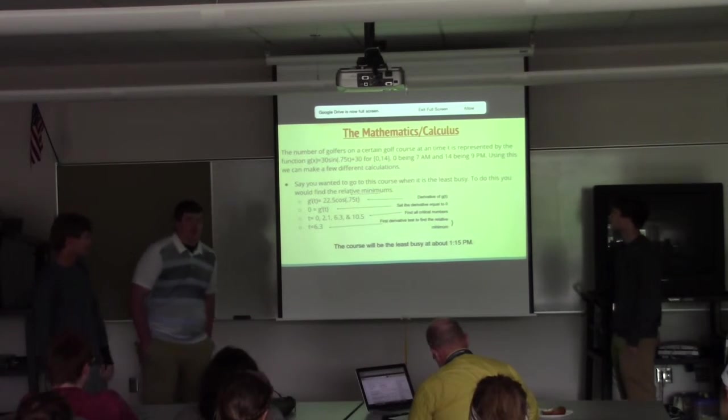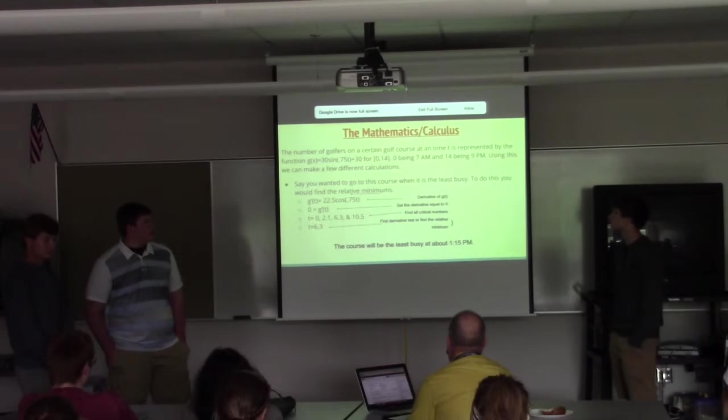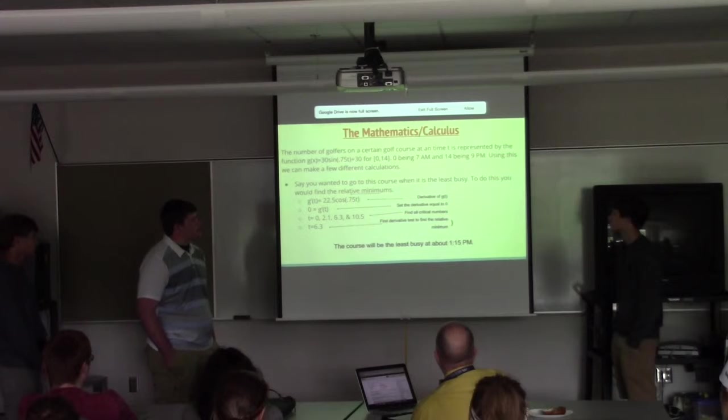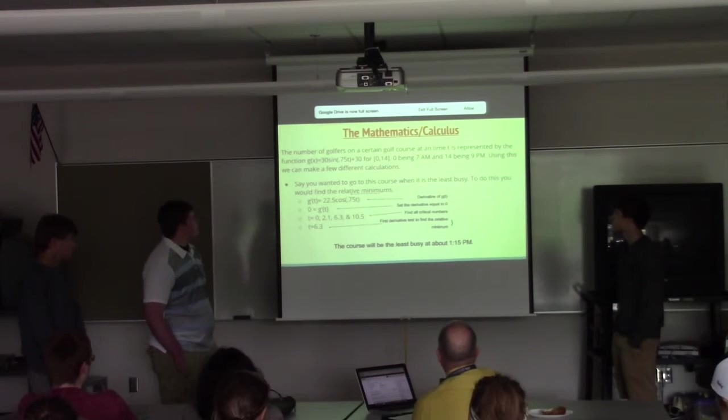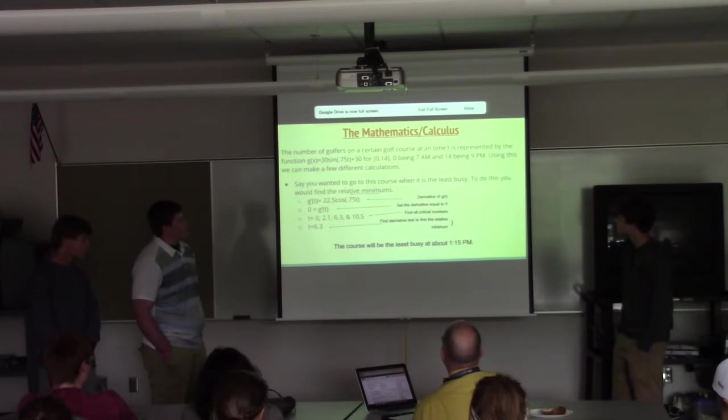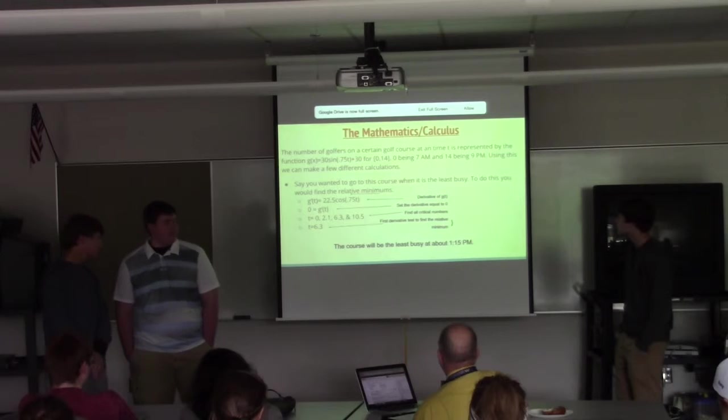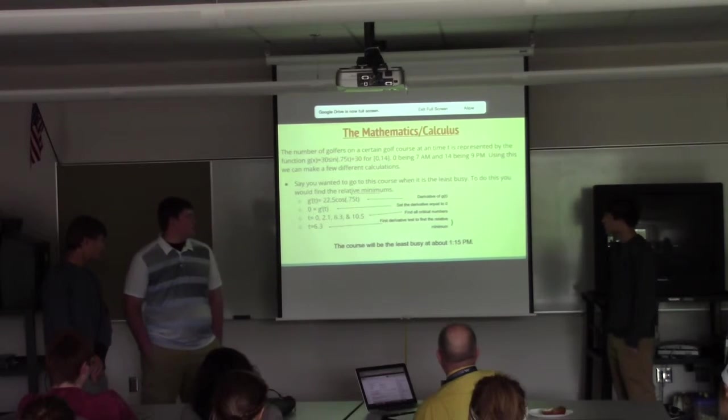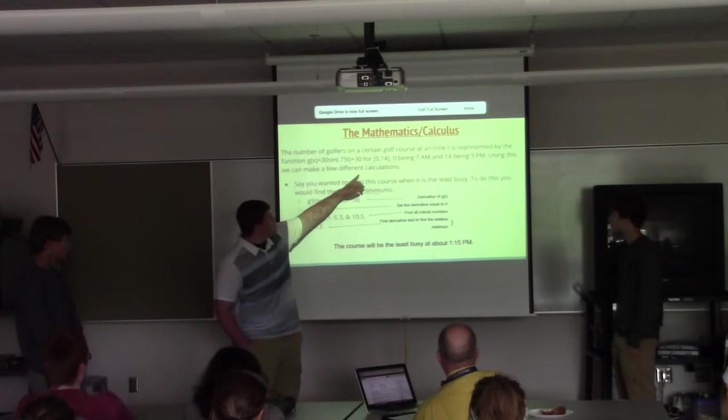What I did was I went to a local golf course and I took calculations on when golfers were at the course, what times they came out, how many golfers there were on the course. I created a function that represented the amount of golfers on the course at one time. The number of golfers on a certain golf course at time t is represented by the function g(t) equals 30 times the sine of 0.75t plus 30 for 0 to 14, 0 being 7am and 14 being 9pm. Using this, we can make a few different calculations. Say you wanted to go to this course when it's least busy - to do this, you would find the relative minimums. You would take the derivative of g(t) and set it equal to 0, and you would get 2.1, 6.3, and 10.5. But you also have to consider that 0 is a critical number also, so that could be a relative minimum since it is included in this interval.